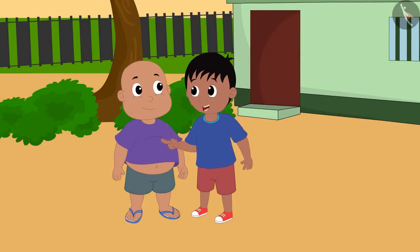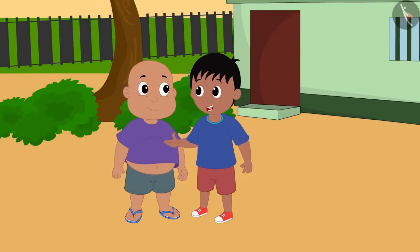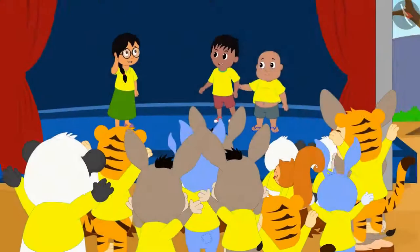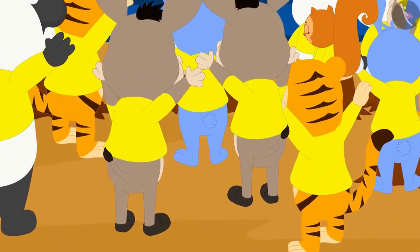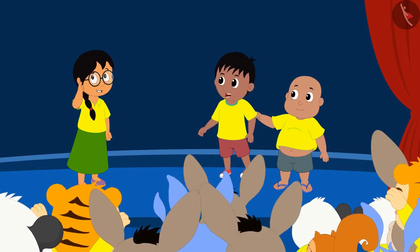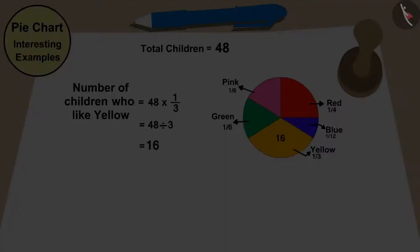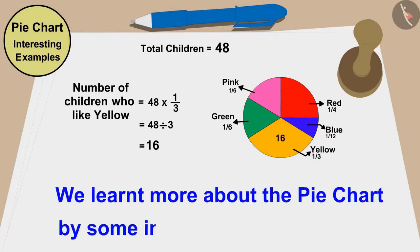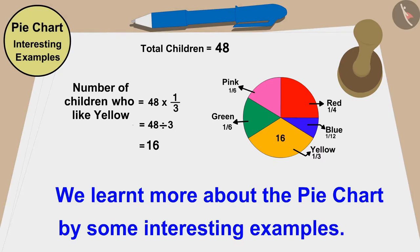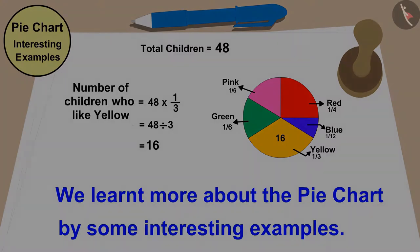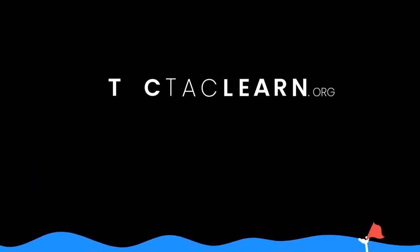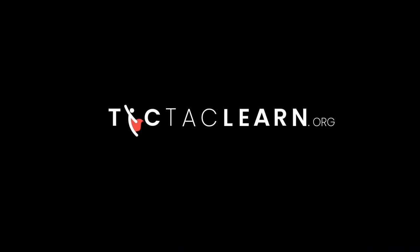Bablu, let's quickly tell Mrs. Khan that most of the children like yellow color. Raju and Bablu conveyed this to Mrs. Khan, and then all the children celebrated the annual festival with great enthusiasm by wearing yellow shirts. Children, in this video, we learned more about the pie chart by some interesting examples. In the next video, we will see some common mistakes related to this. We'll see you next time.